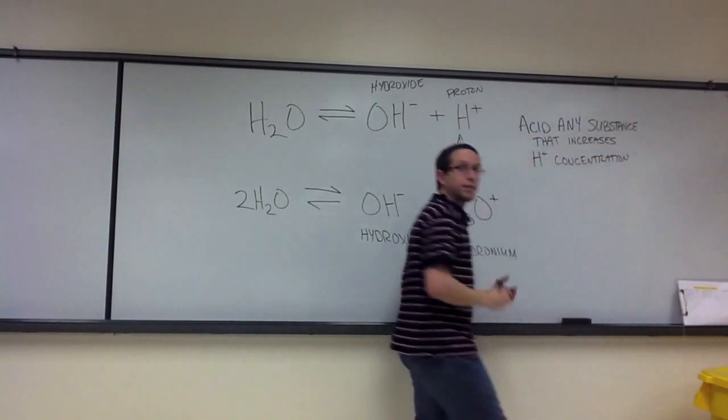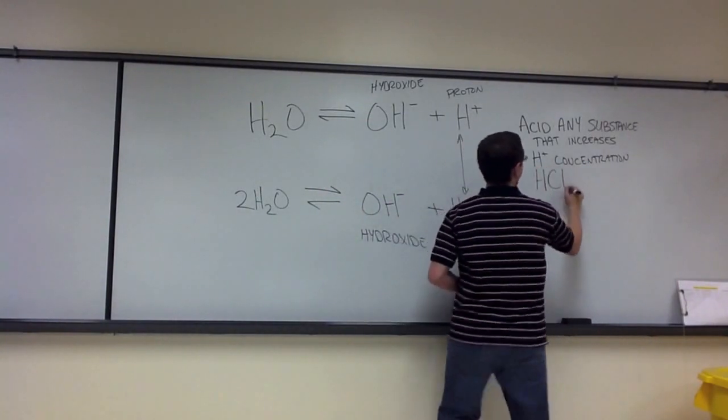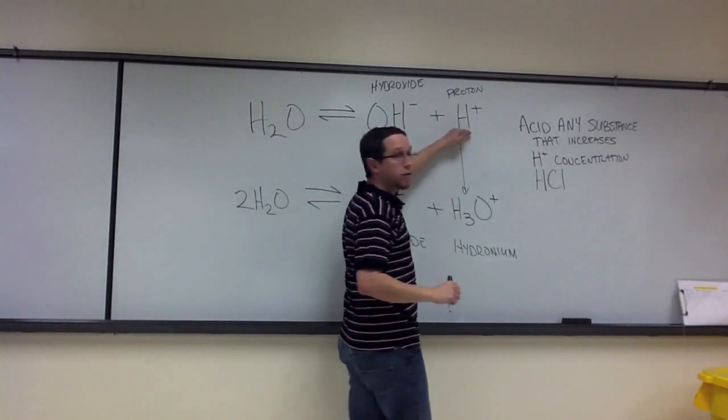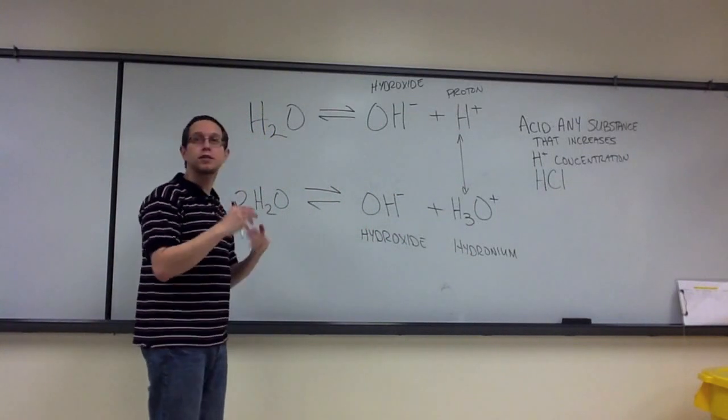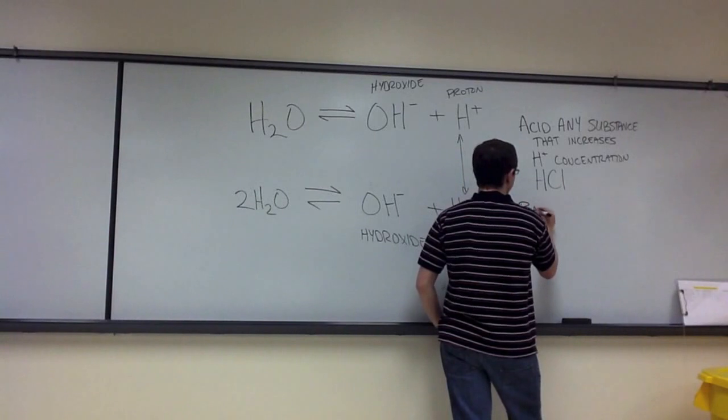And the one that we'll look at today in this lab is known as hydrochloric acid. So when we add hydrochloric acid to water, it increases this proton concentration. And in doing so, what we'll see happen is it's going to actively lower the pH. And the other component is a base.